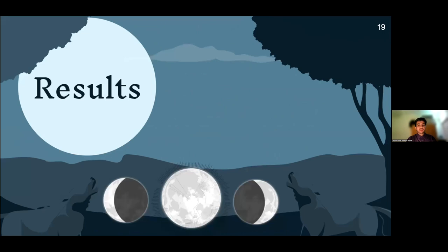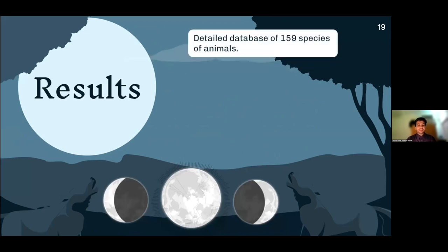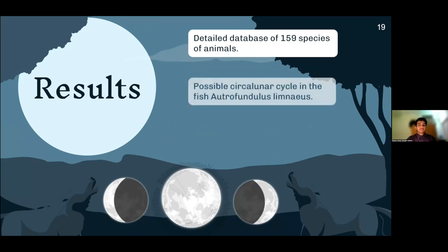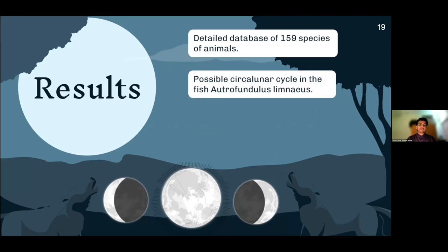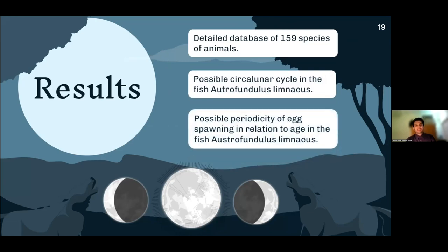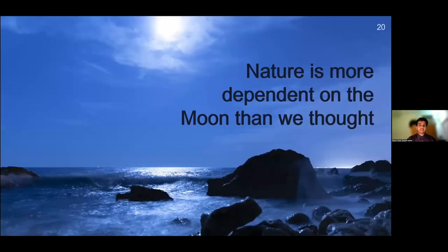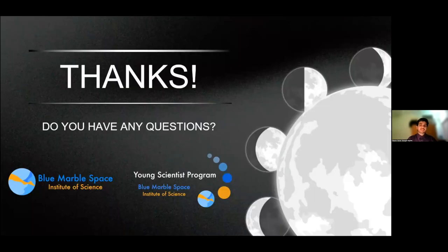In this project, we had the following results: we generated a detailed database of 159 species of animals that exhibit some behavior in relation to lunar phases; we found a possible circalunar cycle in the fish Astrofundulus rinaeus; and we found a possible periodicity of egg-laying in relation to age in the fish Astrofundulus rinaeus. I would like to end this presentation with the initial question: what effects does the moon have on nature? Nature is more dependent on the moon than we thought. We are not only a planet that depends on its star — we are also a planet that depends on its satellite. Thank you very much for your attention.